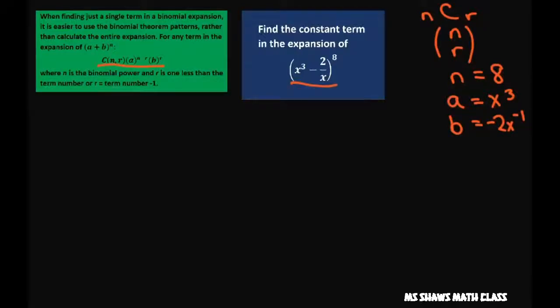I rewrote this and put the x in the numerator so it'll make it easier. So I'm going to write out this formula. That's going to be 8 choose r. My a is x cubed, and that's going to be to the n, so our n is 8 minus r. And then I have negative 2x to the negative 1st power to the r.